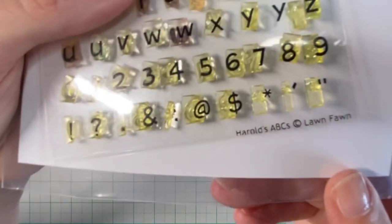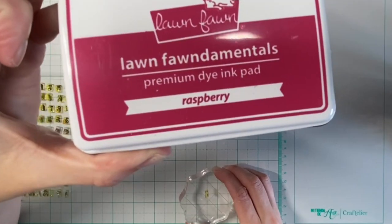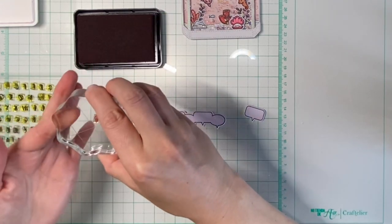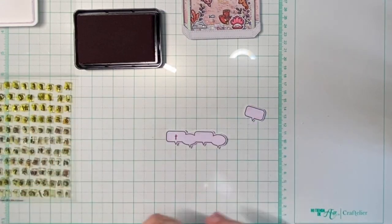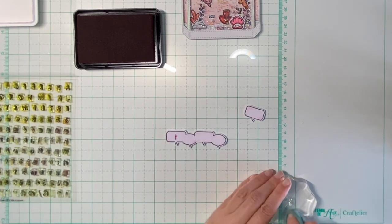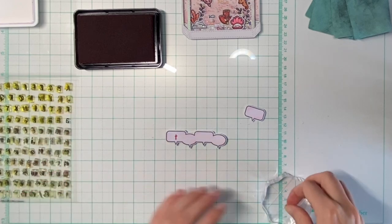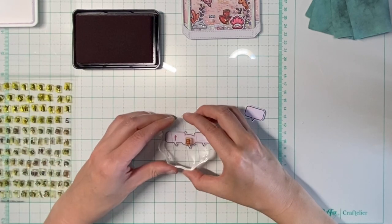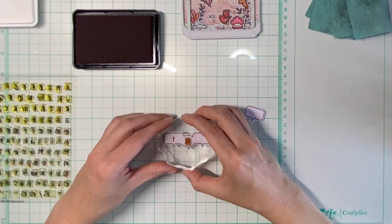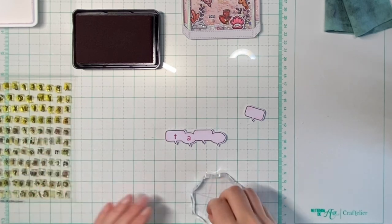To stamp my sentiment into the speech bubbles I used Harold's ABCs and Raspberry ink, and then I just used the block to stamp the individual letters into the individual bubbles. Since I knew I had to cut down my row of critters, I prepared my speech bubbles accordingly, so by masking I created a row of four speech bubbles and an individual one and it fits perfectly. The pun sentiment thank you.